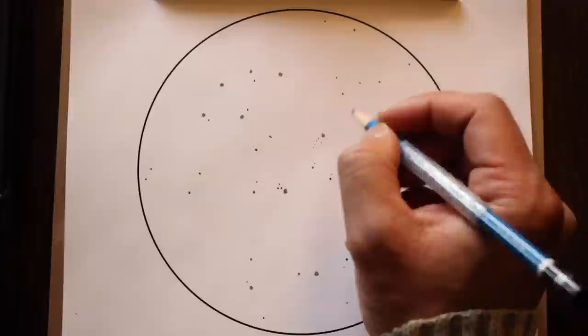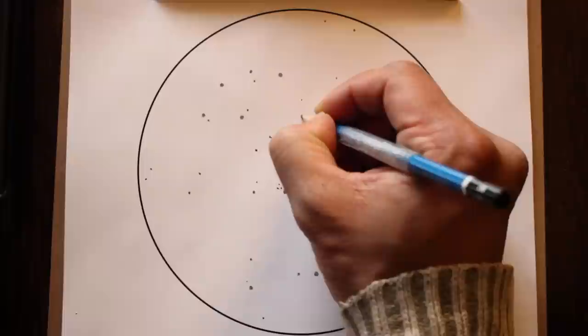Use the brighter stars as guides for positioning them. Imagine shapes like squares and triangles to position the stars among the brighter stars.